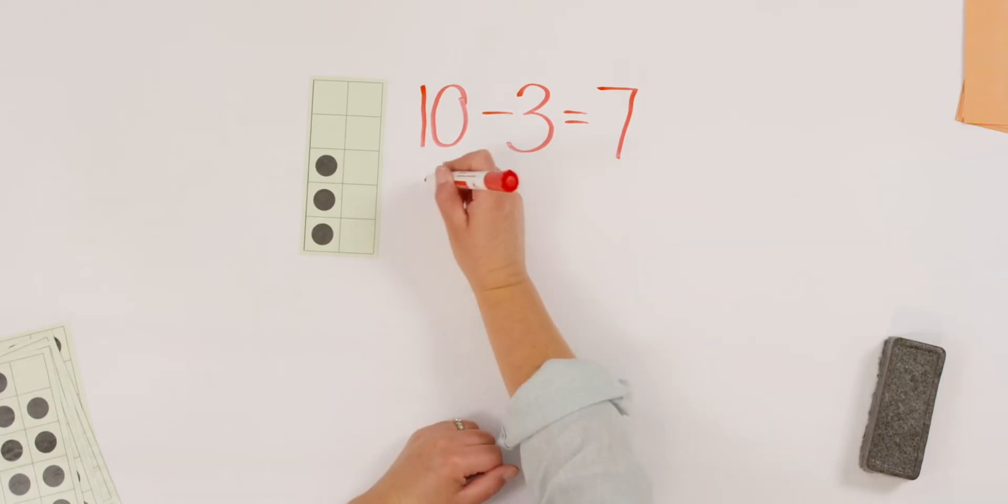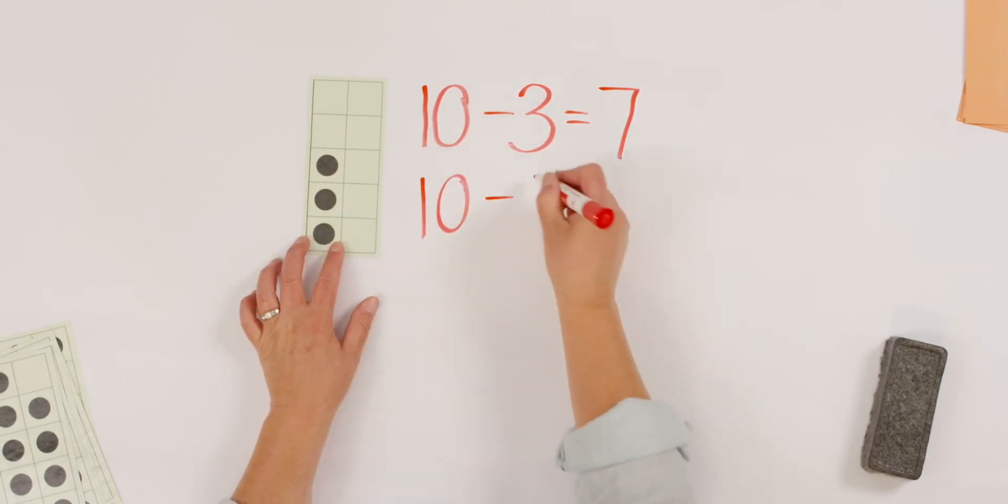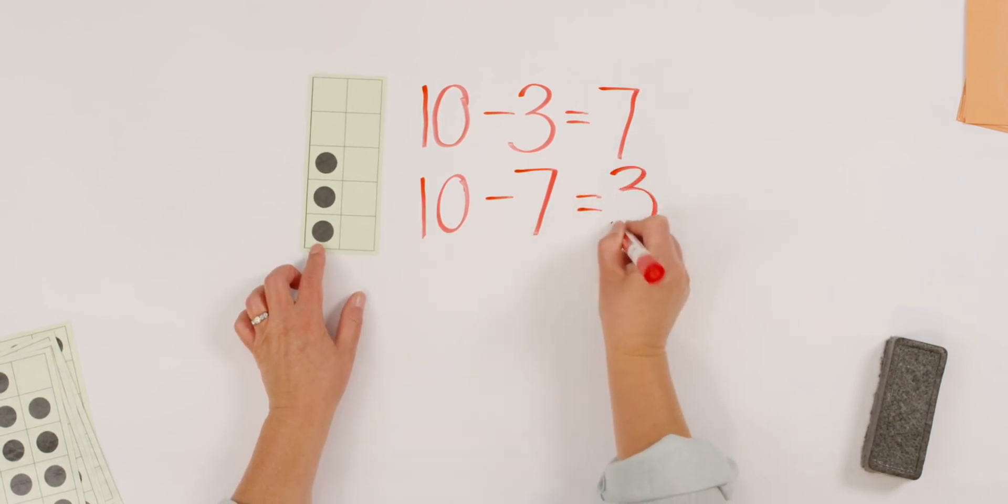What's the opposite? Yes! 10 minus the empty spaces, which is 7, leaves me 3 dots. Pretty easy, huh? One 10 frame can give me 2 subtraction problems. And I bet you can even come up with the 2 addition problems. Can you tell your teacher the 2 addition problems you can make with 7 and 3 and 10? Super!